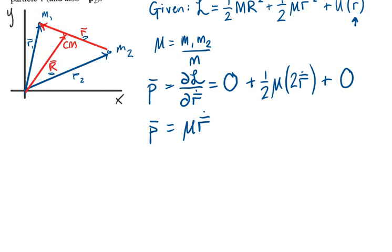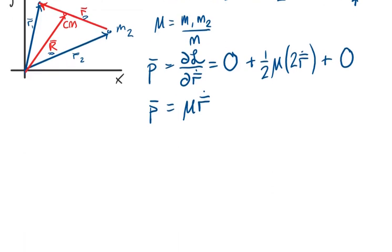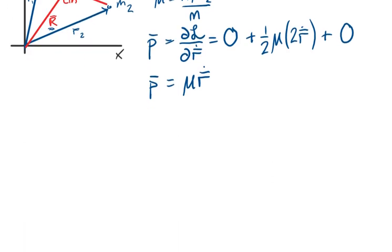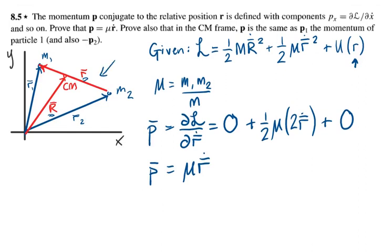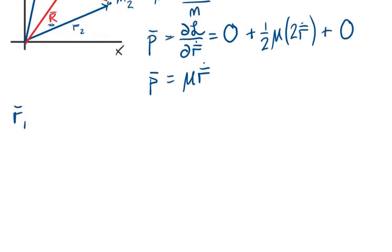All right, the second part of the problem asks us to show that this is equal to P₁, the momentum of particle 1, and negative P₂, the momentum of particle 2. Given in the book, and which you can also find from analyzing this diagram, R₁ in terms of the position of the center of mass and the relative position is equal to the position of the center of mass plus M₂/M times the relative position. Similarly, R₂ is equal to the position of the center of mass minus M₁/M times the relative position.